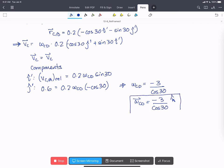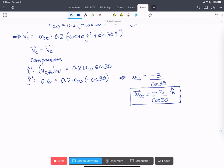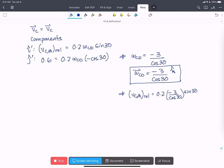As mentioned, it's opposite to the way we defined it, but the math worked out for us. Now we have omega CD, we can find that the relative velocity of C with respect to A, or the rate of C moving along AB equals 0.2 times minus 3 over cos 30 times sin 30. And that gives us the vector v C with respect to A relative equals minus 0.6 tan 30 in the i-hat prime direction.